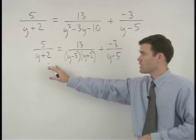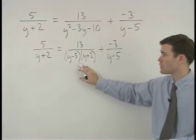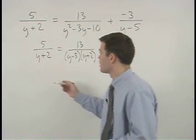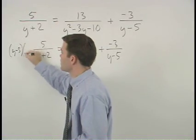You can see that our common denominator is y minus five times y plus two. So we multiply both sides of the equation by this common denominator.